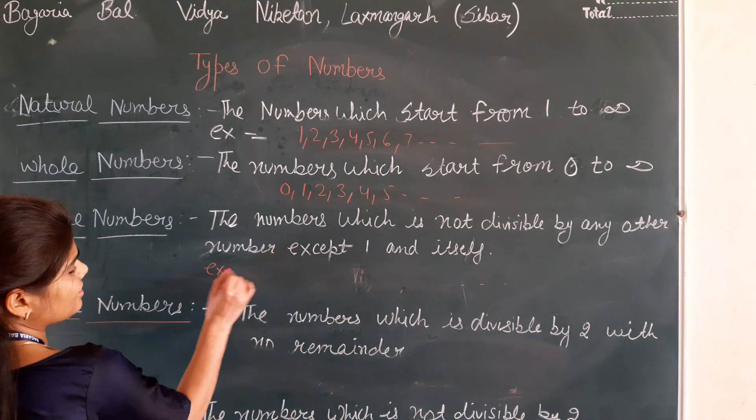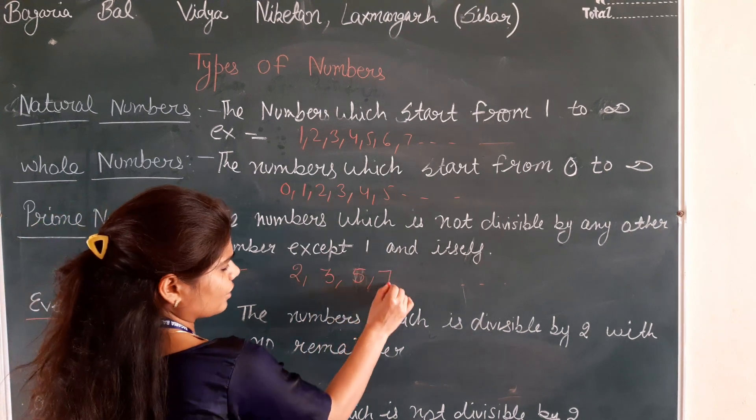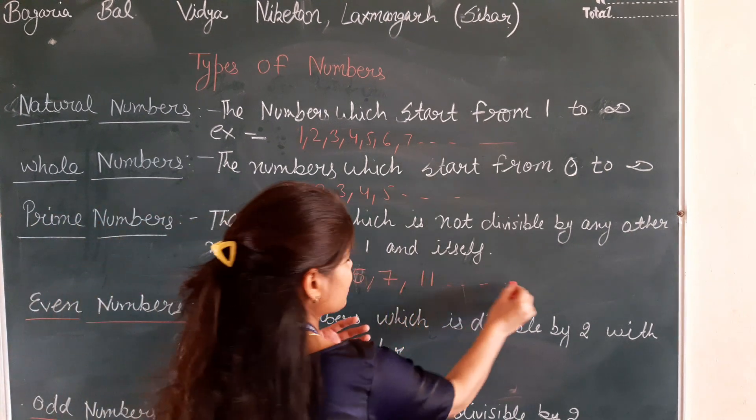Examples of prime numbers: 2, 3, 5, 7, 11. See, there are so many numbers.